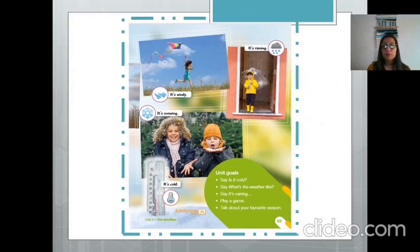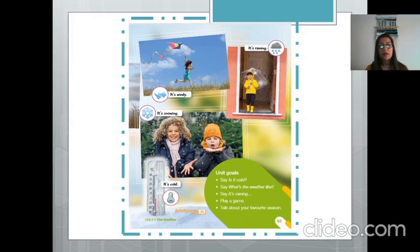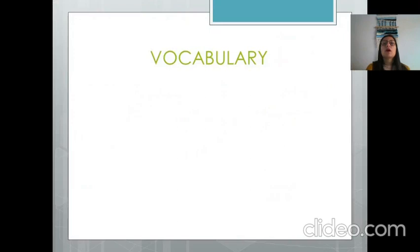Now close your book and take out your notebook because we are going to write the vocabulary. Remember, children, when you sit down to work you should have your materials within reach — your two textbooks, your notebook, pencil case, and everything you need. Close your book, open your notebook, and write Unit Number 3 and the title of the unit, then write 'Vocabulary.'